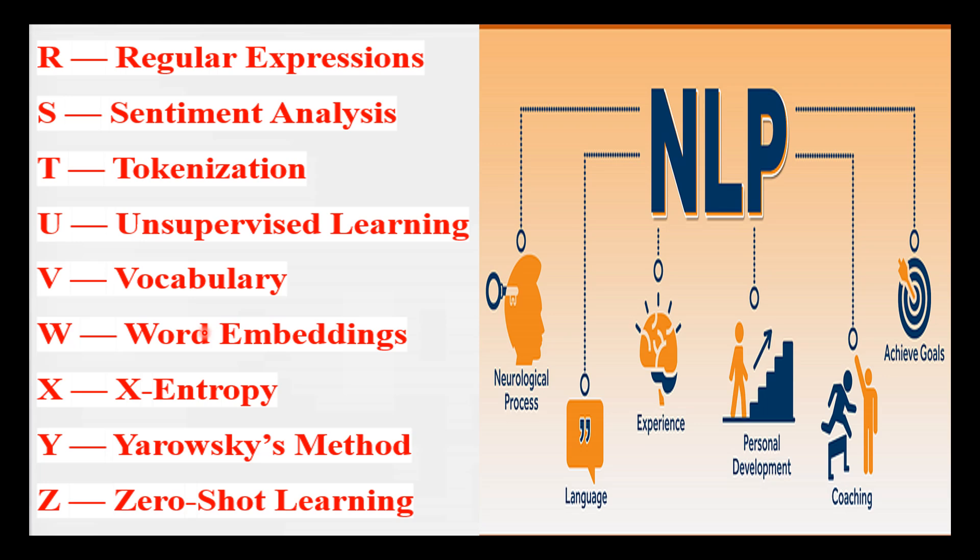W is for Word Embeddings — representing words as vectors in a multidimensional space, capturing their semantic meaning. Think of words arranged on a map according to their meanings.